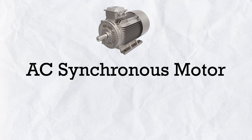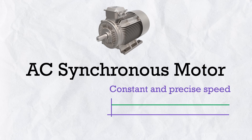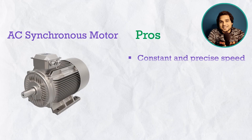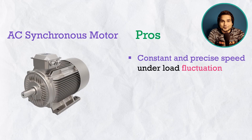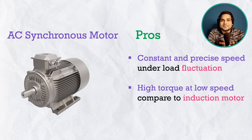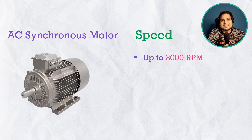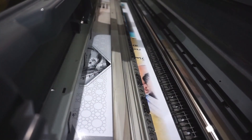To overcome the load-dependent speed problem, we move to the AC synchronous motor. Its main advantage is fixed, precise speed regardless of load fluctuations. AC synchronous motors can also provide higher torque at low speed compared to AC induction motors. They are used where fixed, precise speed is needed. Maximum speed is the same as induction motors — up to 3000 RPM — but overall torque capacity is lower, though more constant.